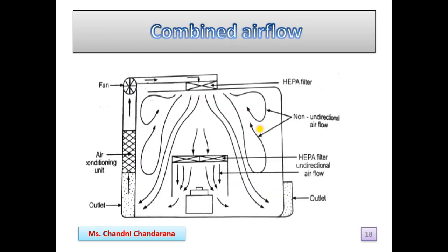The next is combined air flow, where we get both types together. Here you can see the non-unidirectional air flow in one section and unidirectional air flow in another.